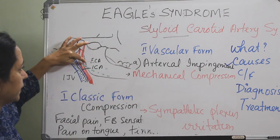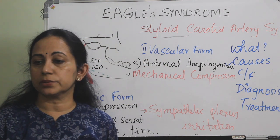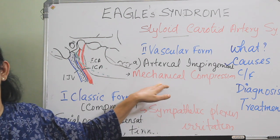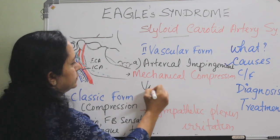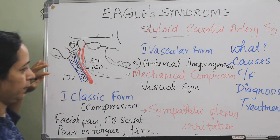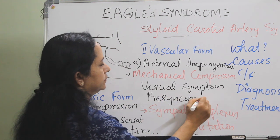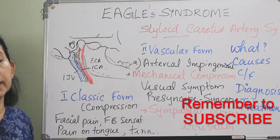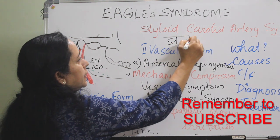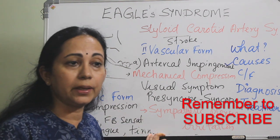When the styloid process impinges on the carotid artery, there can be either mechanical compression or compression on the sympathetic plexuses around the carotids. Mechanical compression can cause visual symptoms, presyncope, and syncope. Very rarely there can be carotid dissection and stroke, though stroke is very rare. If there is sympathetic plexus irritation, it can lead to eye pain or parietal pain.